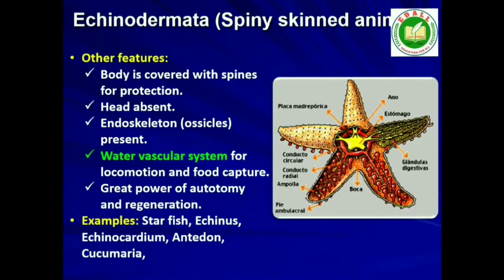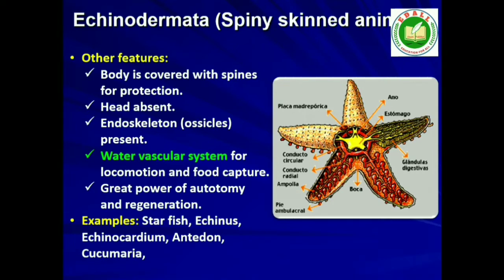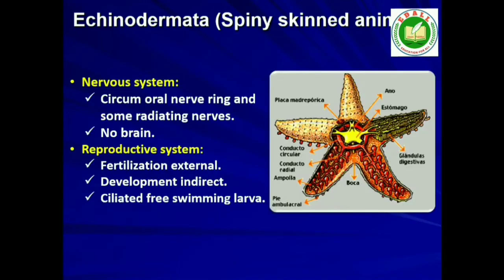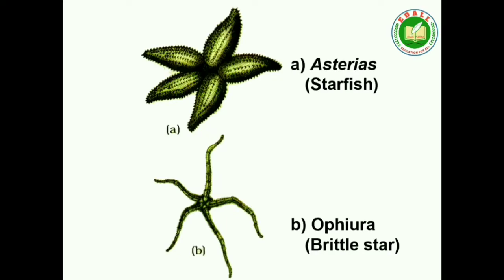Ninth: Phylum Echinodermata. These animals have an endoskeleton of calcareous ossicles, hence the name Echinodermata (spiny bodied). All are marine with organ system level of organization. The adult echinoderms are radially symmetrical but larvae are bilaterally symmetrical. They are triploblastic and coelomate animals. Digestive system is complete with mouth on the lower (ventral) side and anus on the upper (dorsal) side. The most distinctive feature is the presence of a water vascular system which helps in locomotion, capture and transport of food, and respiration. An excretory system is absent. Sexes are separate; reproduction is sexual. Fertilization is usually external; development is indirect with free-swimming larva. Examples: Asterias (starfish), Echinus (sea urchin), Antedon (sea lily), Cucumaria (sea cucumber), Ophiura (brittle star).